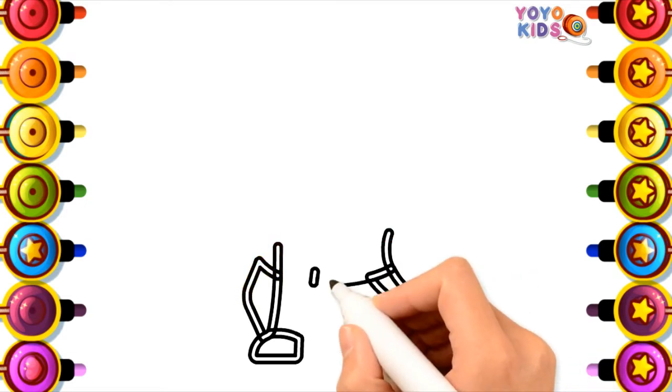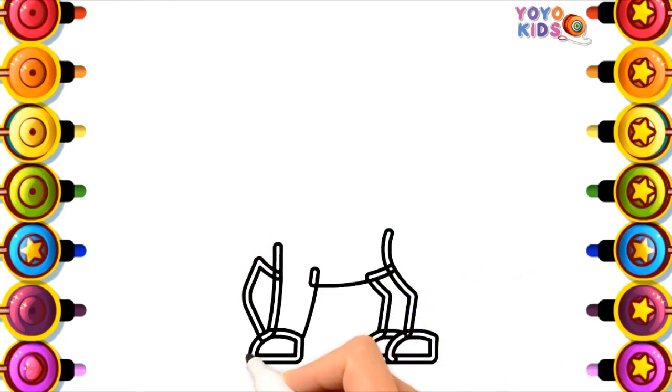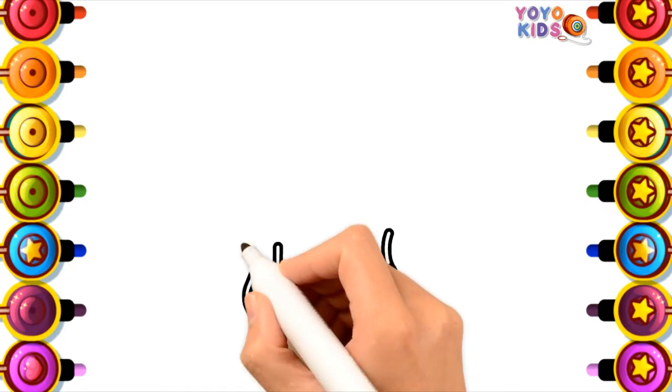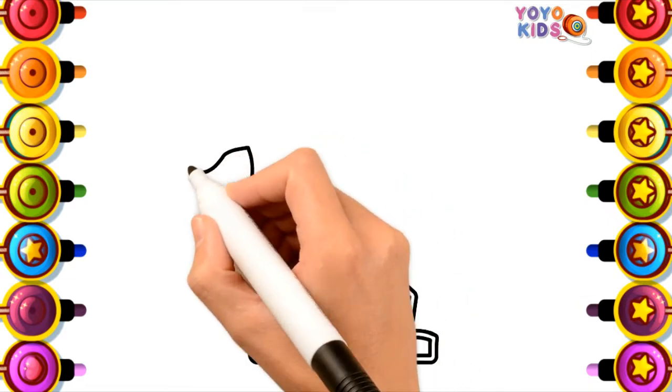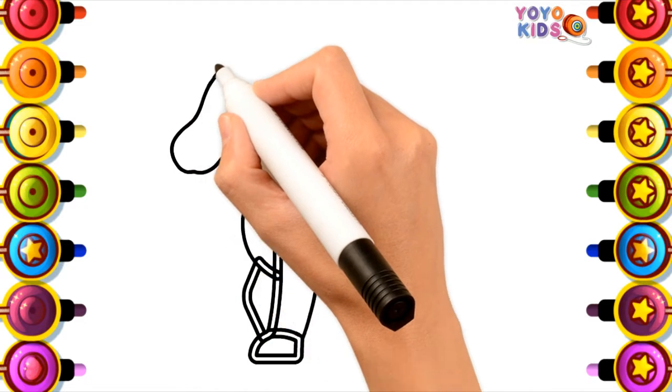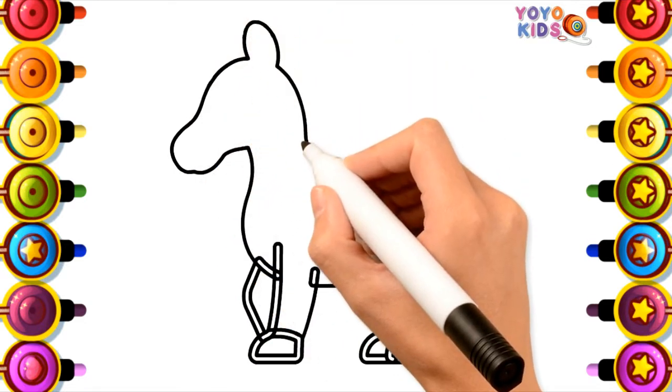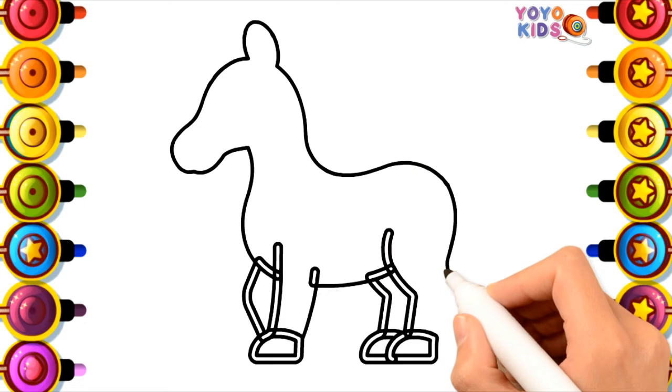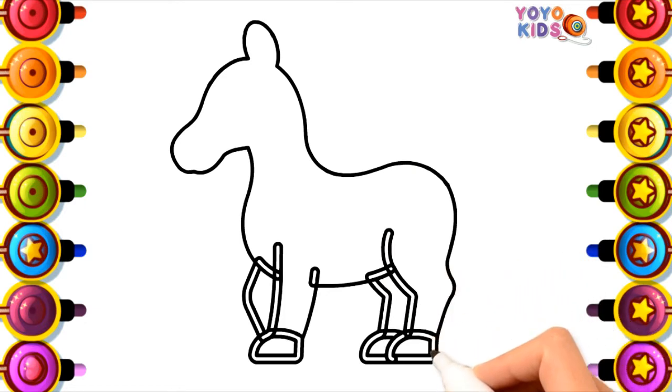E-I-E-I-O. And on his farm he had a pig, E-I-E-I-O. With a here and a there, here, there, everywhere. Old MacDonald had a farm, E-I-E-I-O.